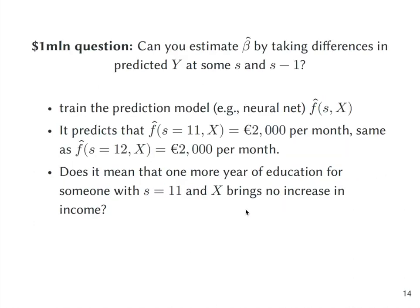So one million dollar question is: can you estimate beta hat by taking simply the differences in predicted Y at some level of s and the same quantity at s minus one?